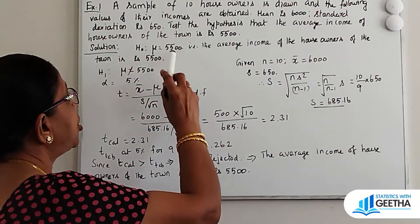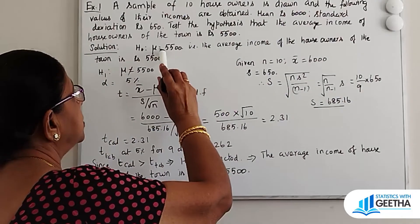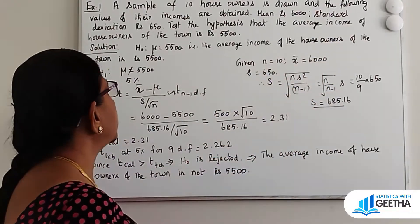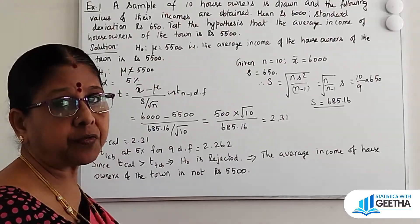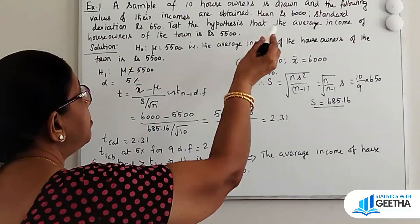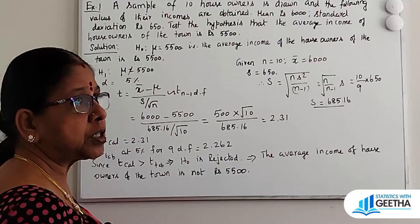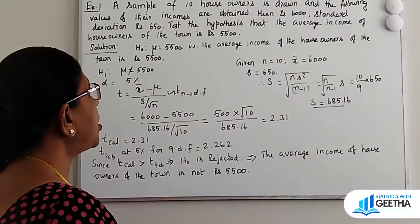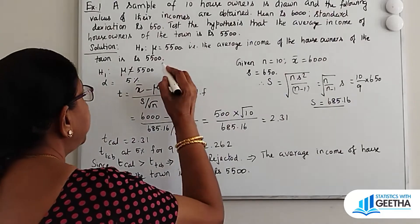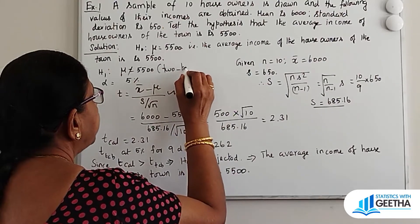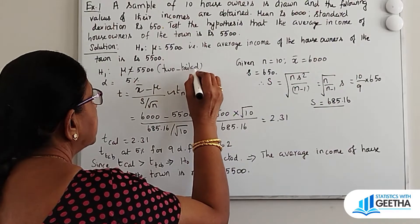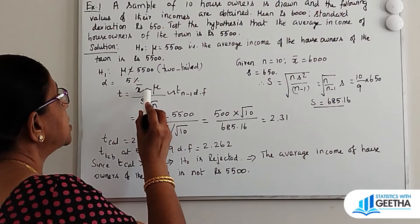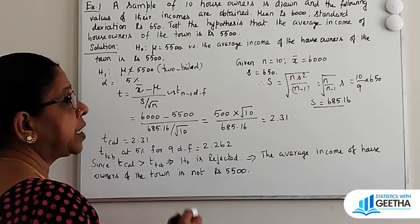Solution: H0: mu equal to 5,500 — that is, the average income of the house owners of the town is Rs. 5,500. H1: mu not equal to 5,500 — that is the two-tailed alternative hypothesis. Alpha is equal to 5%.